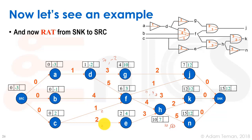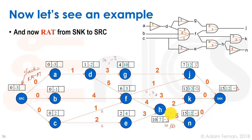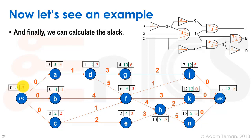We have these negative RATs, and it's easy to see what they mean: slack for setup timing is simply RAT minus AT. Calculating the slack for each node: sink is 12 minus 15 equals minus 3; N is 12 minus 15 equals minus 3; K is 12 minus 12 equals 0; H is 7 minus 10 equals minus 3; J is 10 minus 4 equals 6; F is 3 minus 6 equals minus 3; G is 10 minus 4 equals 6; D is minus 2 minus 1 equals minus 3; source is minus 3 minus 0 equals minus 3; A is minus 3; B is minus 1 minus 0 equals minus 1; C is 2 minus 0 equals 2.